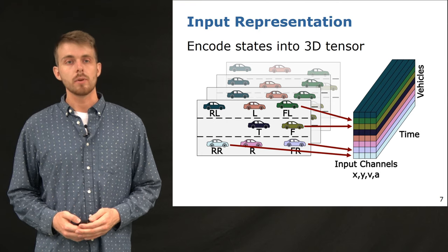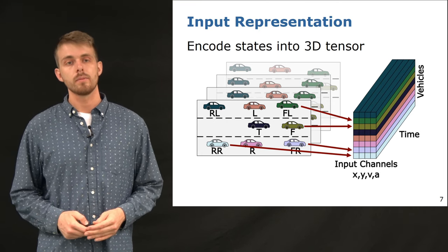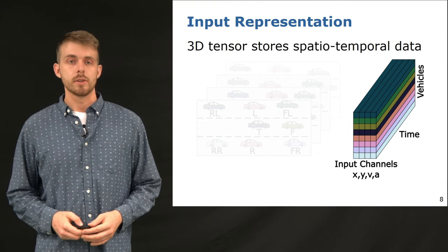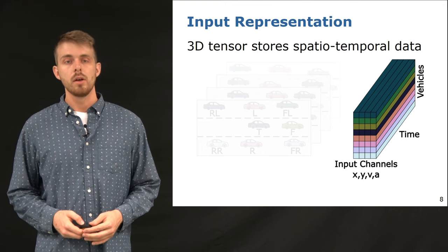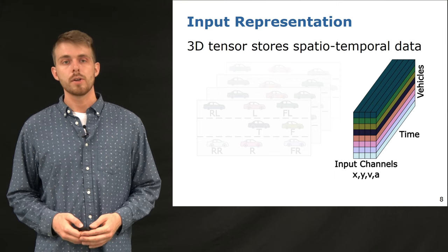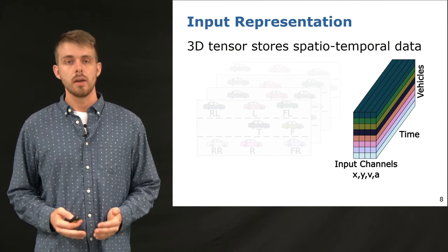The order of neighbors is arbitrary, but needs to be consistent throughout training and testing. Finally, our proposed neighborhood representation encodes the past states along the spatial and temporal dimension into a dense 3D tensor. This makes it possible to use spatial-temporal convolutions that jointly aggregate features from the time and the vehicle dimension.